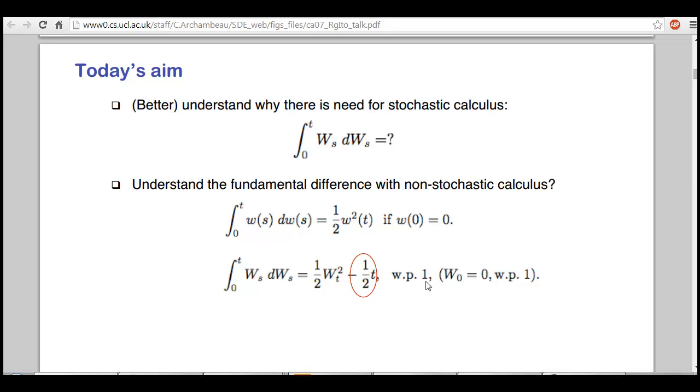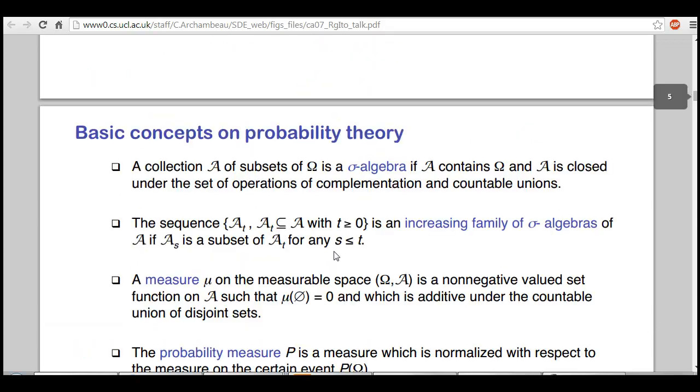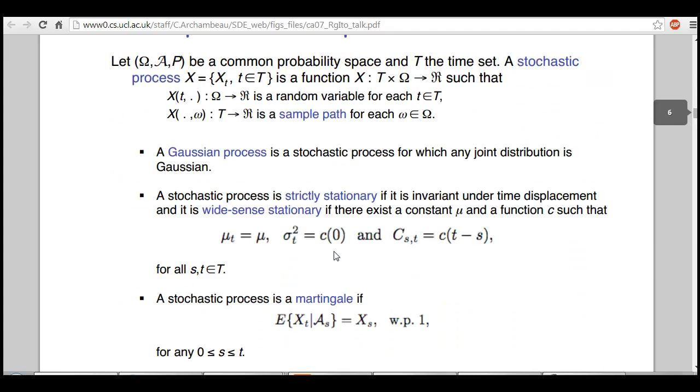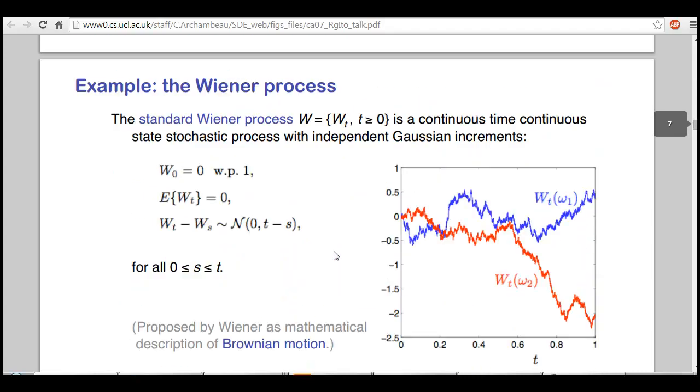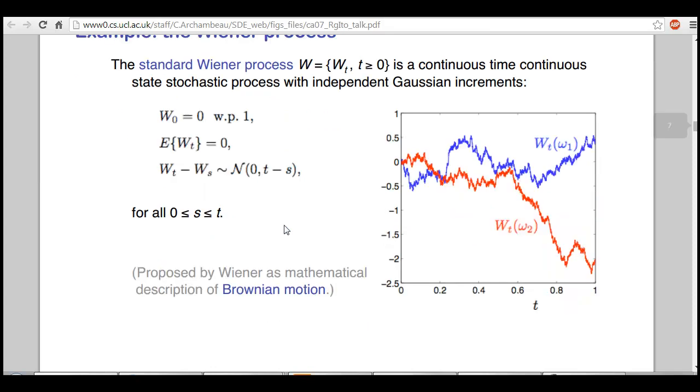This is where it becomes interesting. The standard Wiener process is continuous state with independent Gaussian increments. The expected value of W_T is zero, W_0 is zero. W_T minus W_S—any time this error term is normally distributed with mean zero and variance T minus S. This is Einstein's description of Brownian motion.